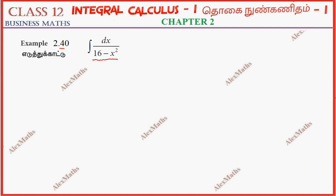You would have integration formula dx by a square minus x square equal to 1 by 2a log of mod a plus x by a minus x plus c.